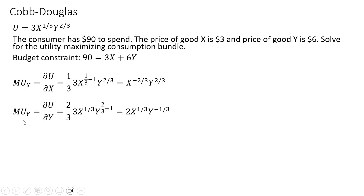The next step is to get the marginal utility of good Y, taking the partial derivative of the utility function but this time with respect to good Y. The exponent on the Y term comes down in front — 2/3 times 3 — and we subtract 1 from that exponent on the Y term. So 2/3 times 3 is 2, and subtracting 1 from the exponent leaves us with Y raised to the minus 1/3 power.